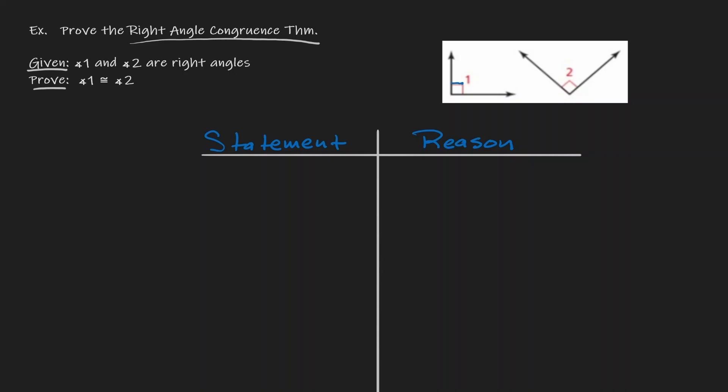If angle one is a right angle, it has 90 degrees. And angle two is a right angle, then it has 90 degrees. They both have the same measurement, so they are congruent to each other. So we're done — what is there to prove? Well, that's actually how we're going to be proving this. We need to sit down and write down our logical reasoning using a statement and reason table. So let's formalize the proof.